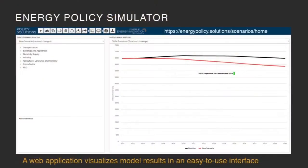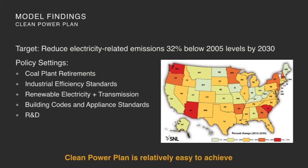This is a picture of the web app — you're going to see this live, so you don't need to stare at that yet. A quick word on some of the findings. The first thing we did, because there are 50 different policy levers and they interact with each other, is you don't add them up.